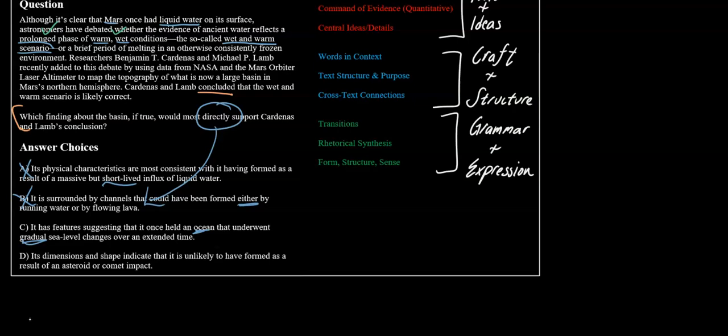Now let's take a look at D, just to make sure that we can rule out D. D talks about an asteroid or a comet impact. Nowhere in this passage is an asteroid or comet impact mentioned, so we can clearly rule out D. That means our answer here is going to be C.